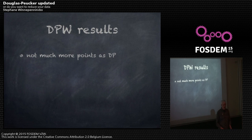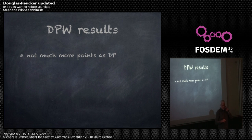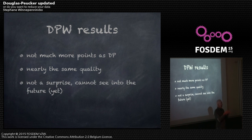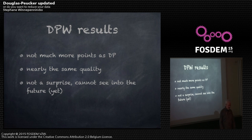What are the results of the updated Douglas-Peucker? You have a little bit more points than in the original Douglas-Peucker, but nearly the same quality — which is not a surprise, because when you're doing it online you don't know what's coming. If you wait for the endpoint it's easier to do better, but you have to choose what you're going to do, and if you're limited on memory it's acceptable.